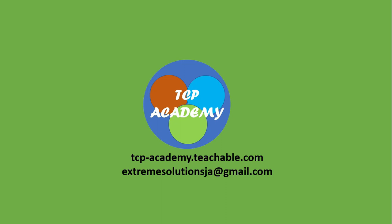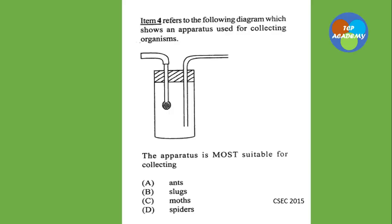It was brought to you by tcp-academy.teachable.com. You can reach us at extremesolutionja at gmail.com. Now, a question appeared on the CSEC 2015 paper about which organism the pooter apparatus is most suitable for collecting — is it ants, slug, moths, or spider? Go back to your video and see if you can find the answer.